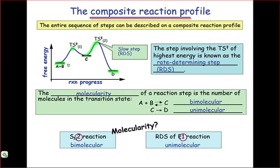You can think of it as if the equilibrium between A and B and C is well established before this conversion of C to D even starts taking place.